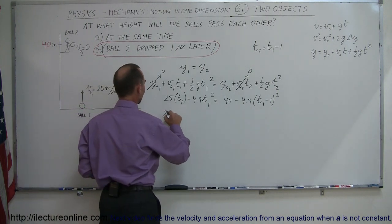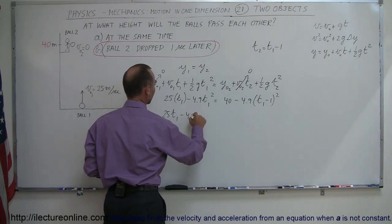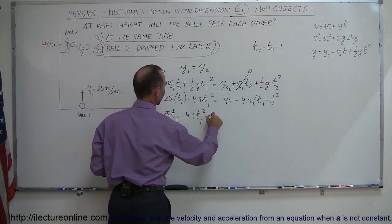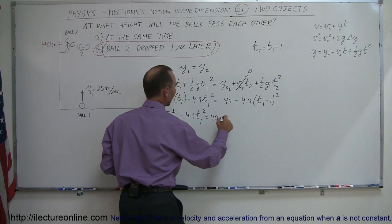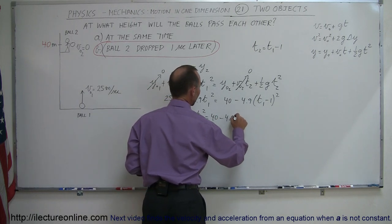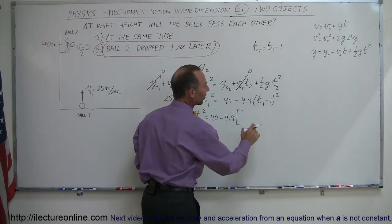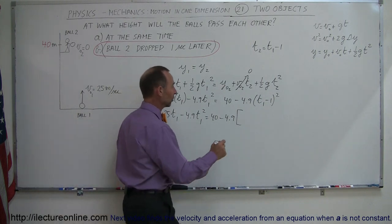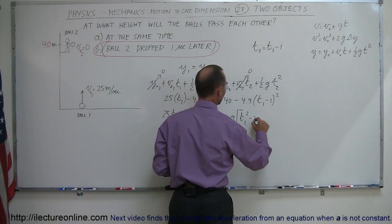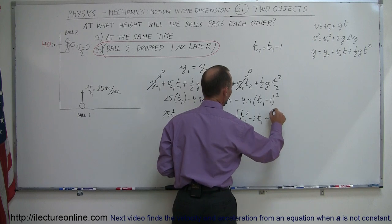We can write 25t1 minus 4.9 t1 squared equals 40, so now we have minus 4.9 times this quantity squared, that's a binomial squared, so it's t1 squared minus 2t1 plus 1.